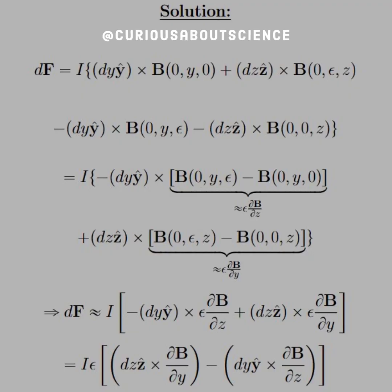Alright, so in the differential form again, we have F equal I dy ŷ cross B(0,y,0) plus dz ẑ cross the expansion and then the minus signs. So pretty much doing the whole thing as far as all components are concerned at the various locations. Okay, so one for each side, like they said.